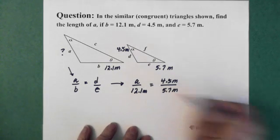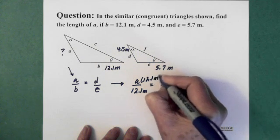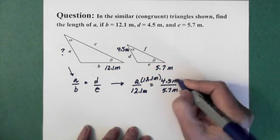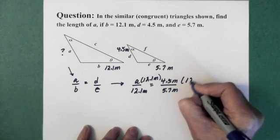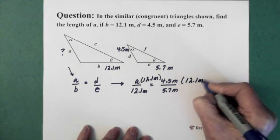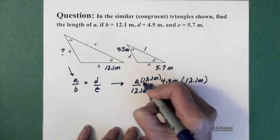Now we want A by itself. So I'm going to multiply it by 12.1. And since I multiply on the top here, I have to multiply in the numerator on this side. So 12.1 meters. 12.1 divided by 12.1 is 1. So these two are gone.